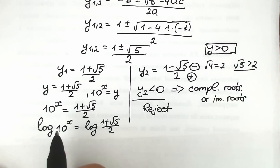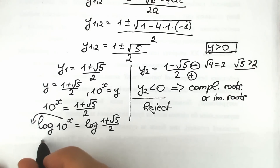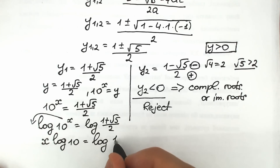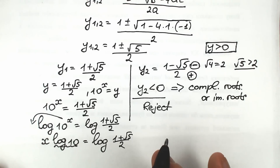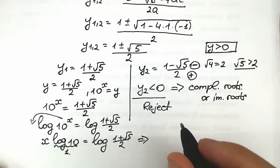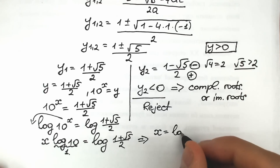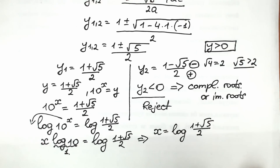Using the log power property, we bring the exponent x to the front: x times log 10 equals log of (1 plus square root of 5) over 2. Since log base 10 of 10 equals 1, we have: x equals log of (1 plus square root of 5) over 2. This looks like our solution, but we can simplify it a little further.